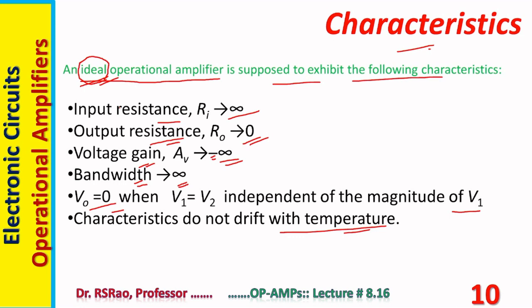As already mentioned, infinity and zero values are not achievable. In reality, one can have an operational amplifier with high input resistance, low output resistance, and a high voltage gain — though not infinite. Bandwidth infinity is not realizable, but a huge amount of bandwidth is possible. Complete elimination of temperature drift is not achievable, but a lesser amount of drift is possible in practice.